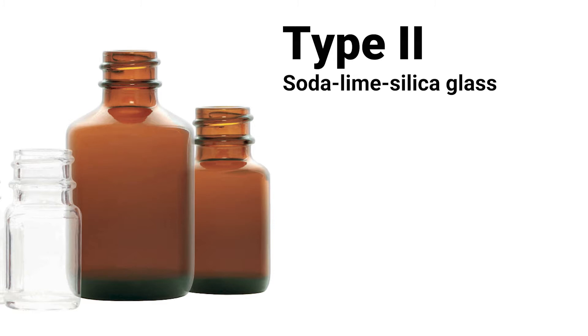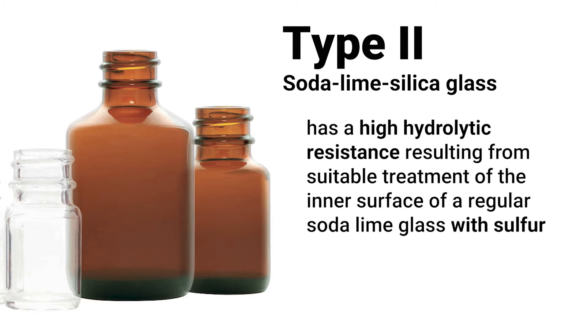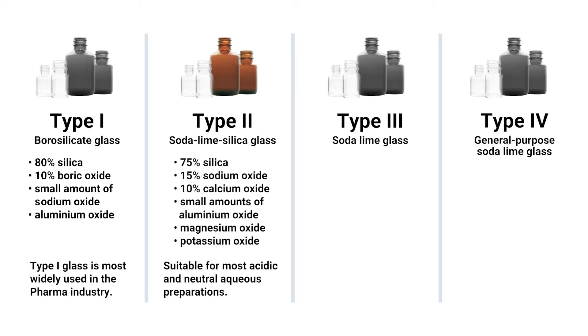Type 2 glass containers — soda-lime silica glass — has a high hydraulic resistance resulting from suitable treatment of the inner surface of a regular soda-lime glass with sulfur. It also has a lower melting point compared to type 1 glass and is easier to mold. They are suitable for most acidic and neutral aqueous preparations, whether parenteral or non-parenteral.